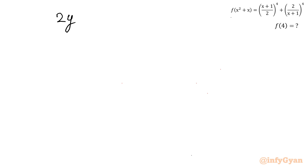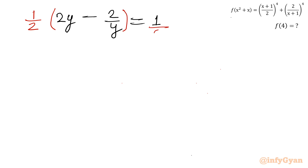We have 2y minus 2 over y equal to 1. Dividing both sides by 2, this becomes y minus 1 over y equal to 1 over 2.